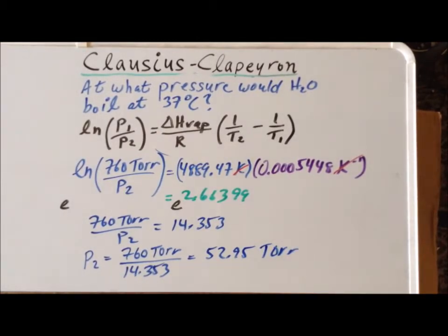What does this mean? Well, we know that at a pressure of 760 torr, the normal boiling point of water will be 100 degrees centigrade. If we want water to boil at 37 degrees centigrade, we need to reduce the atmospheric pressure to 52.95 torr